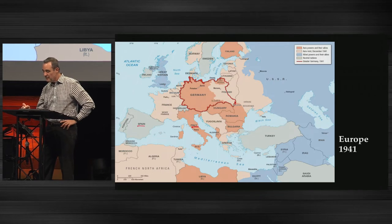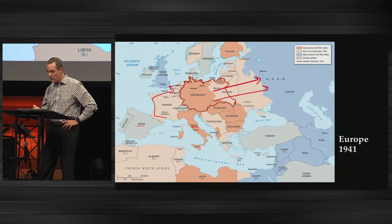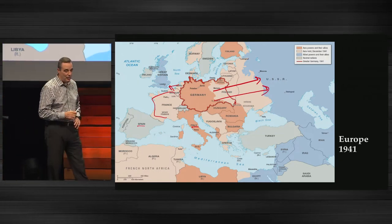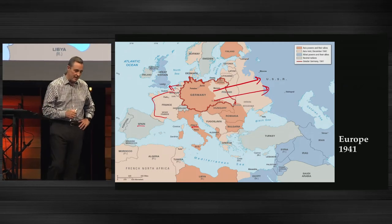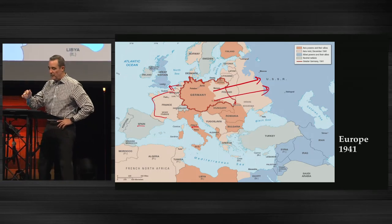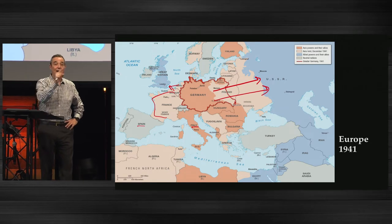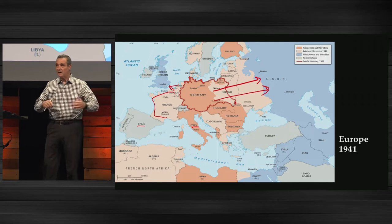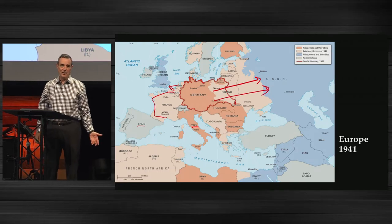Next, Hitler — after conquering France but having trouble with Great Britain — decides to conquer the USSR as well. He turns around and attacks Russia. Stalin goes into a deep depression for about a week thinking, 'How can my good friend Adolf Hitler betray me?' So the USSR joins the Allied side. At the end of 1941 the USA gets pulled in because Japan, which had joined Germany, attacks America. Now it's America and England against the Axis powers, and the USSR says, 'I changed my mind — I want to join you.'